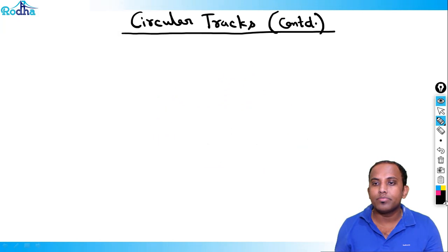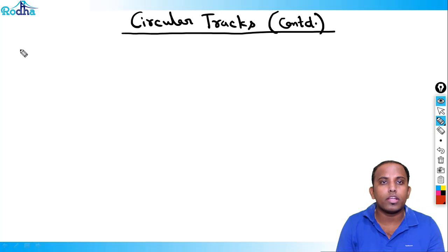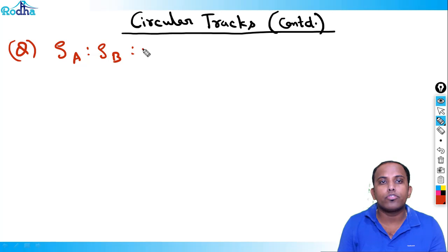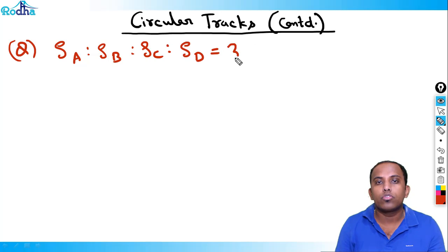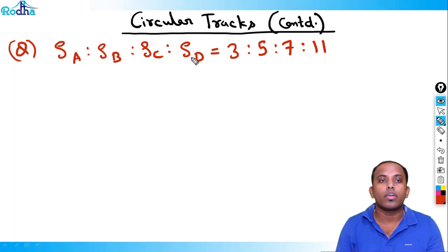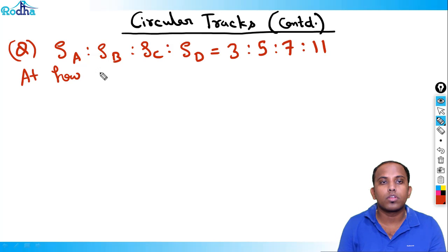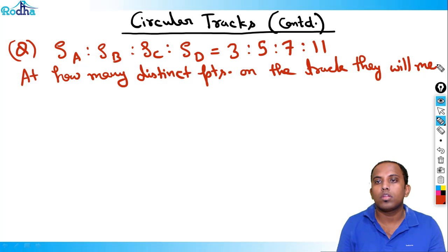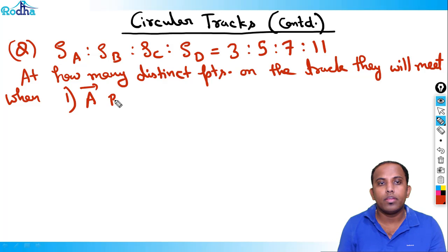Let's continue circular tracks. Next, let's extend the concept to four people. Let's say the speed of A to speed of B to speed of C to speed of D is in the ratio 3:5:7:11. At how many distinct points on the track will they meet? First part: A, B, C and D are running in the same direction.